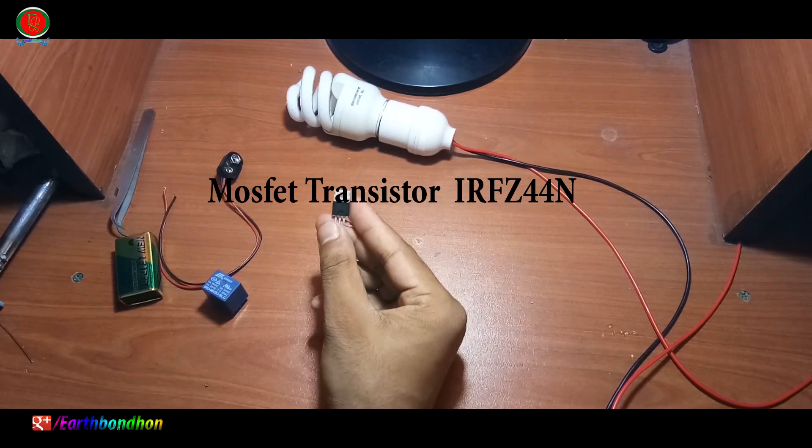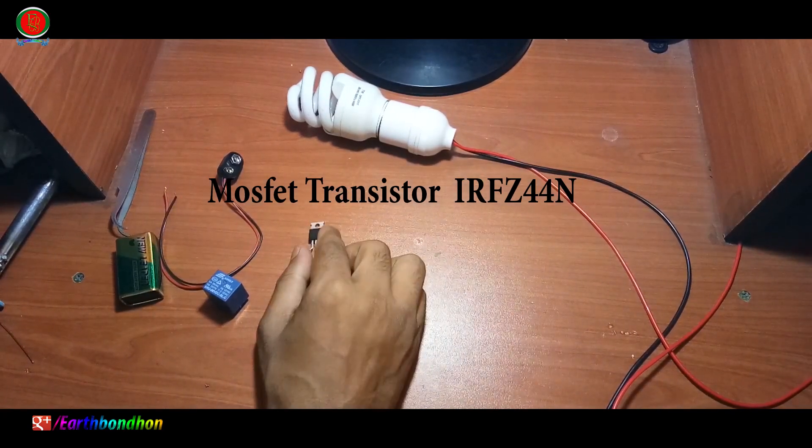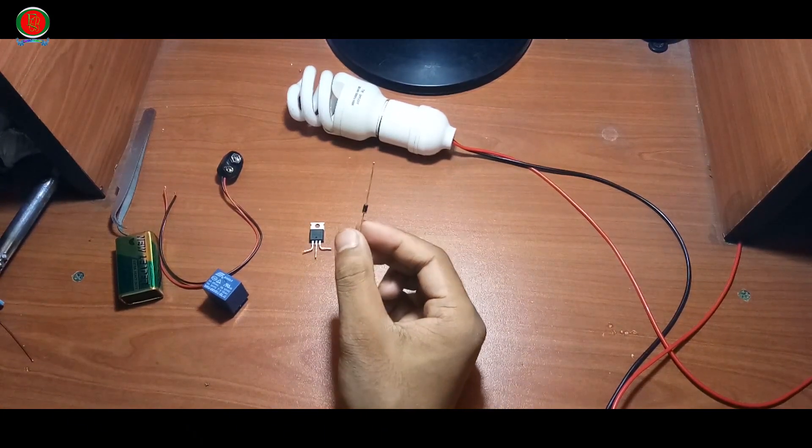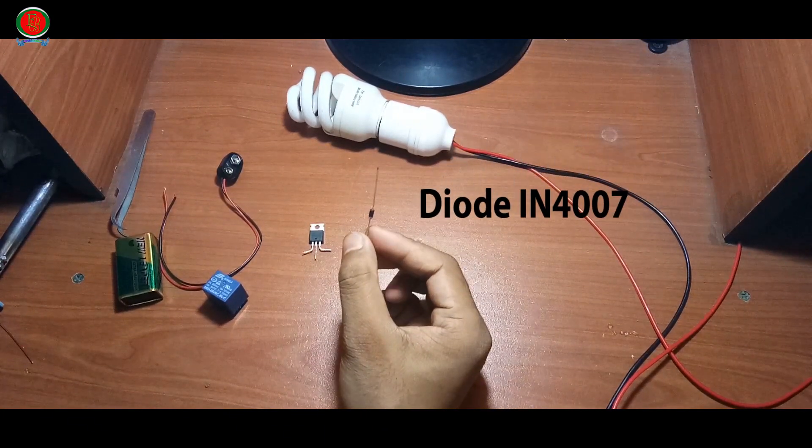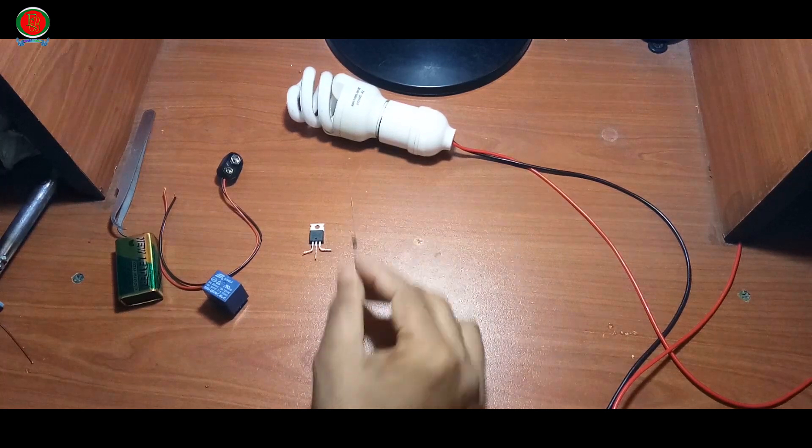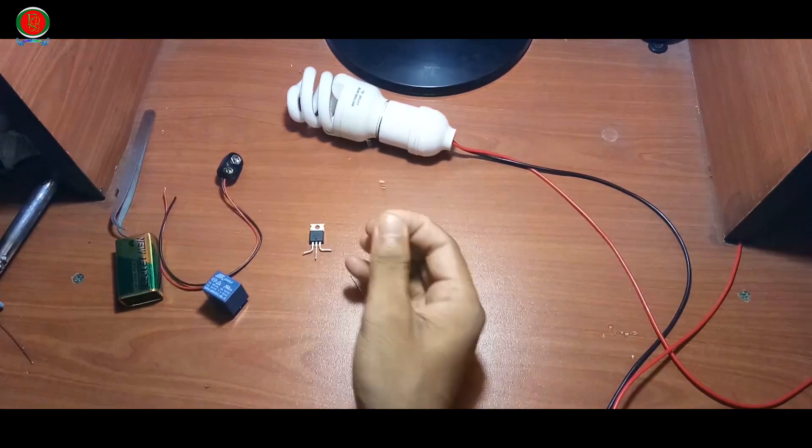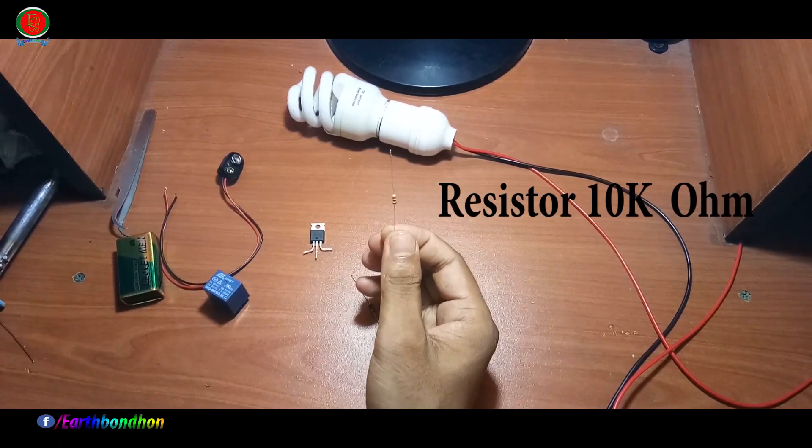MOSFET Transistor number is IRFZ44N, Diode number is N4007, Resistor 10 kilohms.